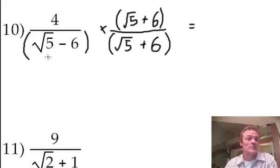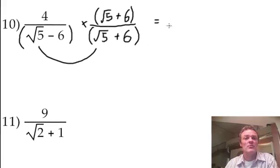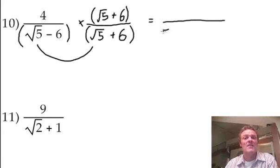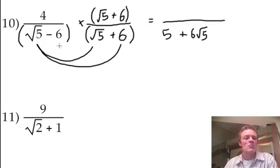So let's have a look. Root 5 times root 5 is 5. Root 5 times positive 6 is positive 6 root 5. That's all I can write. So think about it. I'm doing a FOIL. Right, what's negative 6 times root 5? That's negative 6 root 5. So let's look at this and go, those are the two that are going to cancel.